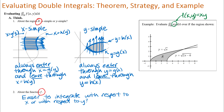Starting with the region: going through the region in the direction of increasing x, I'm always entering through y equals square root of x and always leaving through y equals square root of 2 minus x. So this region is x-simple. However, it is not y-simple — if you go through the region in the direction of increasing y, there are two different places where you enter: sometimes through the x-axis between x equals 0 and x equals 3, and sometimes through the curve y equals square root of 2 minus x.